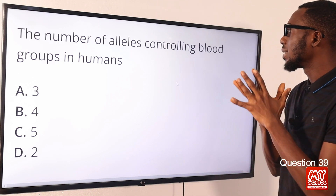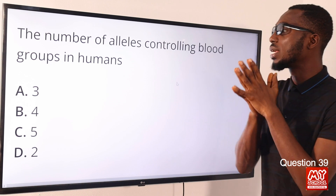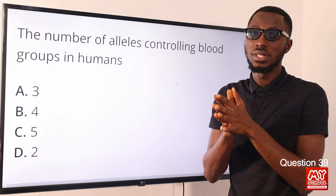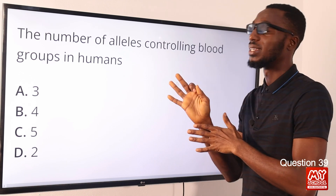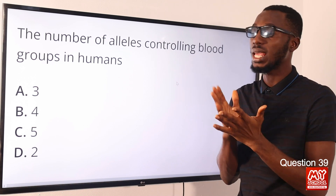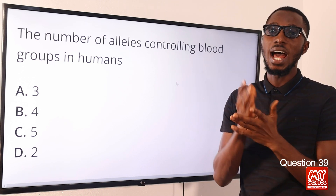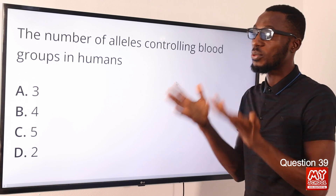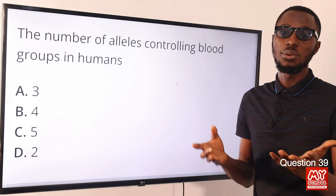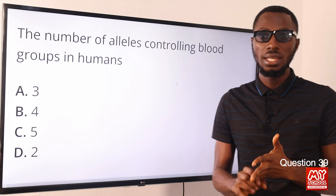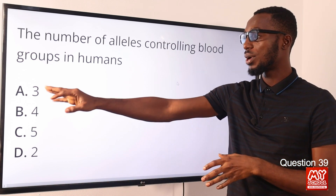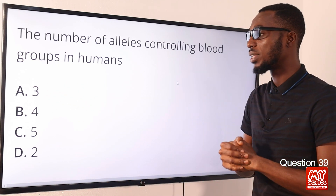Question 39. The number of alleles controlling blood groups in humans is three. They are in the form of A, B, and O — and that is what gives us blood groups A, B, AB, and O. So the correct option is option A for three.